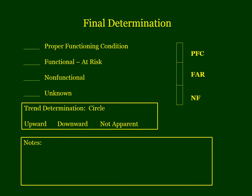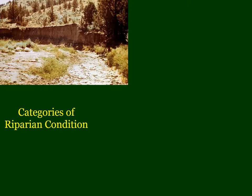For your final determination, the team spends whatever time is necessary on the creek — walking, studying, observing. There are three categories you'll come to agreement on: whether it's in proper functioning condition, functional but at risk, or non-functional. These categories of riparian condition can be seen in pictures showing a non-functional creek, one that after management changes is functional but at risk, and one that after good management is restored to proper functioning condition.